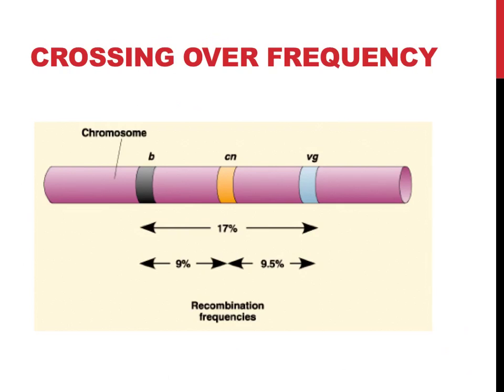If two genes are separated by independent assortment, you would expect the same chance of genes separating in any manner. With crossing over, the frequency of traits being passed on together is always 50% or higher. The closer two genes are together, the less likely crossing over is to occur randomly between them, and the more common that they are going to be passed on together. In the example on this slide, genes B and VG are about twice as far apart as B and CN, or CN and VG.